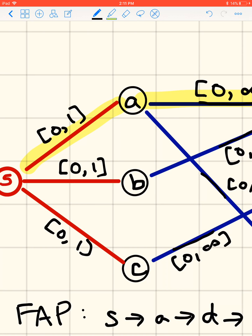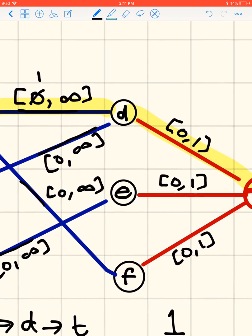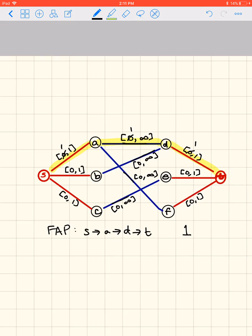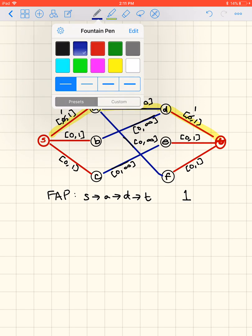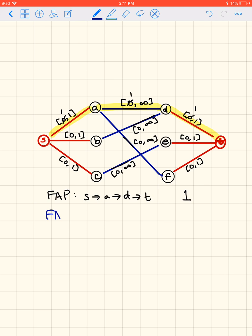So I guess I should have got rid of my highlighting before I continued, but anyway. There's a 1, a 1, and a 1. And now we go on to step 2, our second flow augmenting path.